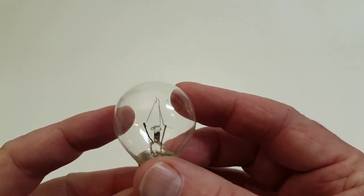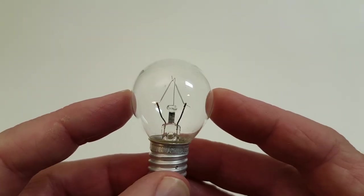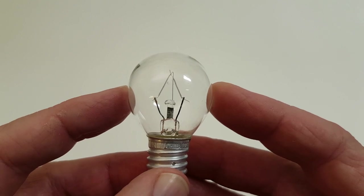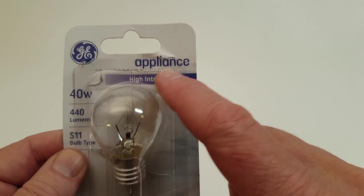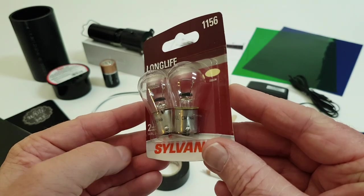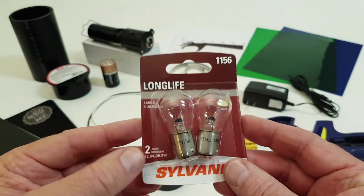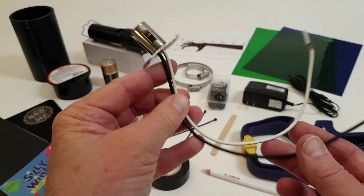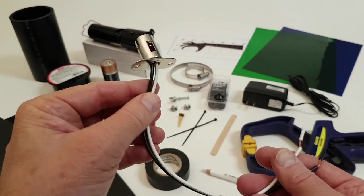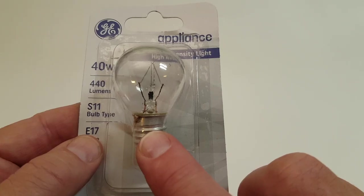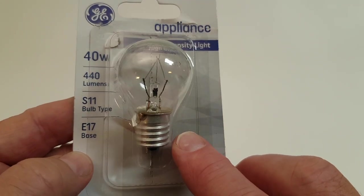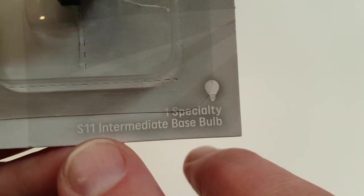To avoid these, my suggestion is to look for a clear, incandescent bulb with a single filament. Replacement appliance bulbs and automobile bulbs are a great resource for these and are readily available. The drawback is that these bulbs need their own size and style of base. For example, this appliance bulb needs an intermediate base.